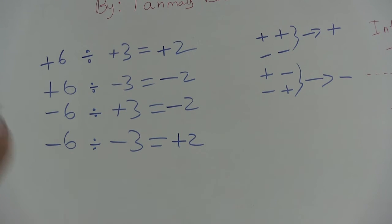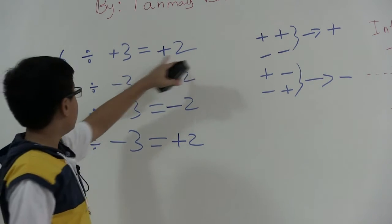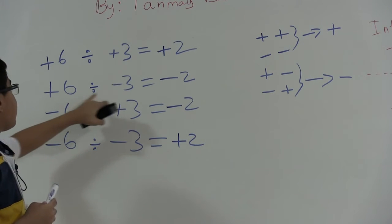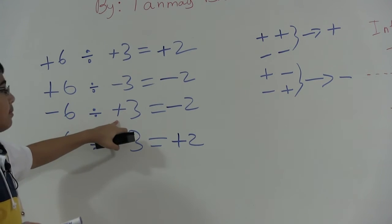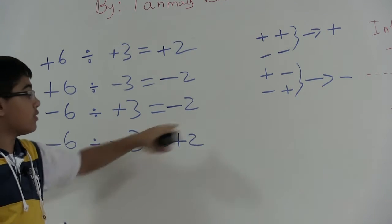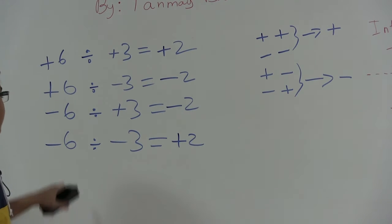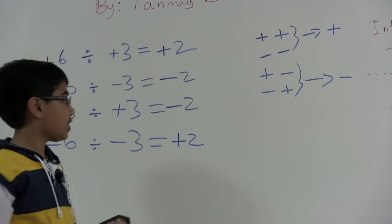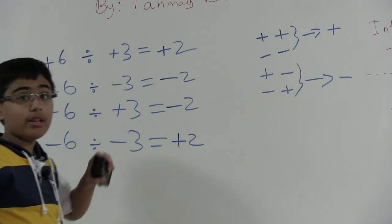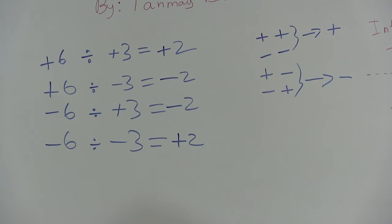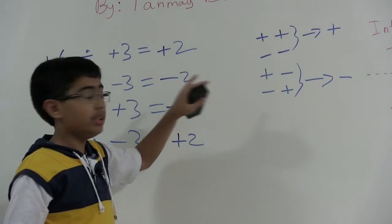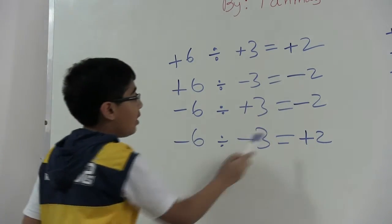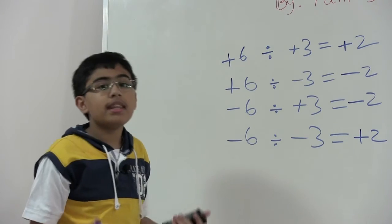Six divided by three equals two, and positive divided by positive — same signs — gives positive two. Positive six divided by negative three: plus and minus, different signs, gives negative two. Negative six divided by positive three: minus and plus, different signs, again negative two. Negative six divided by negative three: minus and minus, same signs, gives positive two. This shows the exact same sign rule applies whether you're doing multiplication or division.